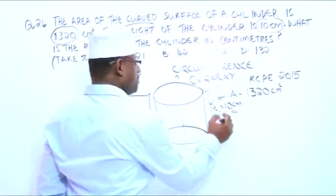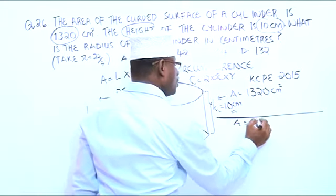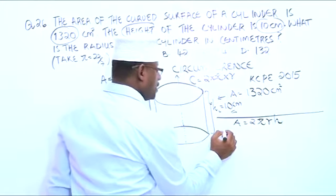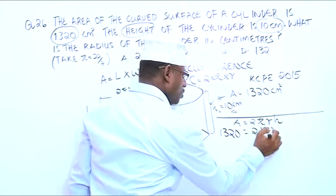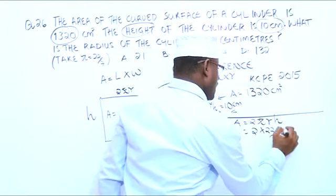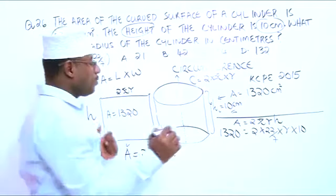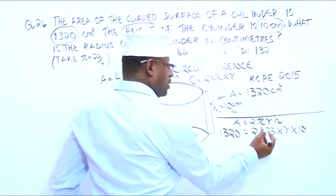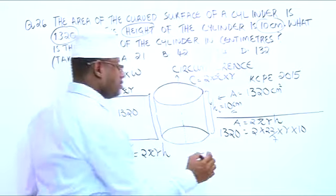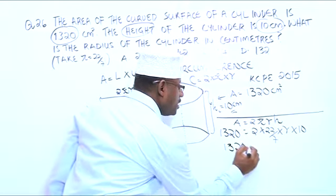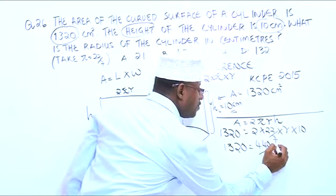So what we need is just to substitute. Area is equal to 2 times pi times radius times height: 1320 equals 2 times 22 over 7 times r times 10. So 2 times 22 is 44, and 44 times 10 is 440. We have 1320 equals 440 over 7 times r.